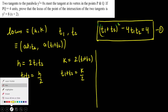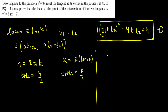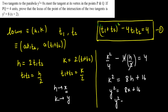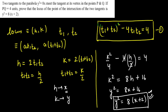Now I'm going to substitute these values into equation one. Substituting t₁ + t₂ = k/2 and t₁t₂ = h/2 gives (k/2)² - 4(h/2) = 4, which simplifies to k²/4 - 2h = 4. Multiplying through by 4: k² = 8h + 16. To find the locus, replace h with x and k with y, giving y² = 8x + 16, or y² = 8(x + 2). This is the equation of the locus. Hence proved.